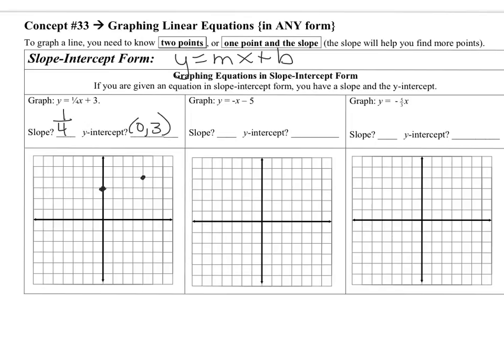Remember, the opposite of going up and to the right is down and to the left. Remember, down is negative, but left is also negative. And a negative over a negative is also a positive. And so there's the line. If I wanted to check a point, I would just pick a point as an ordered pair, plug it into the equation, and see if it works.